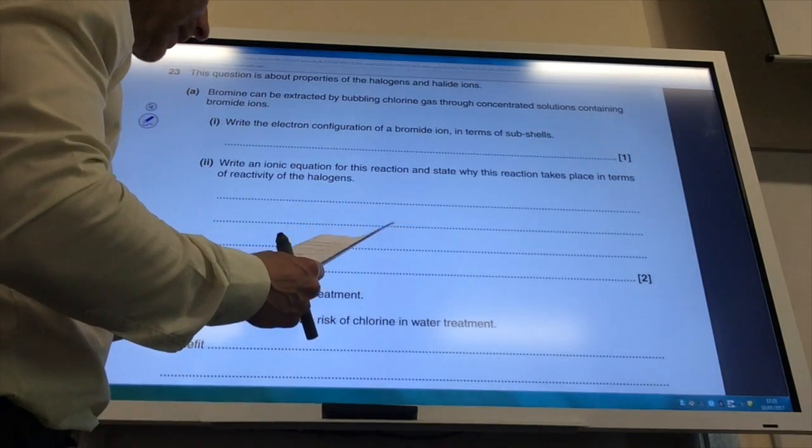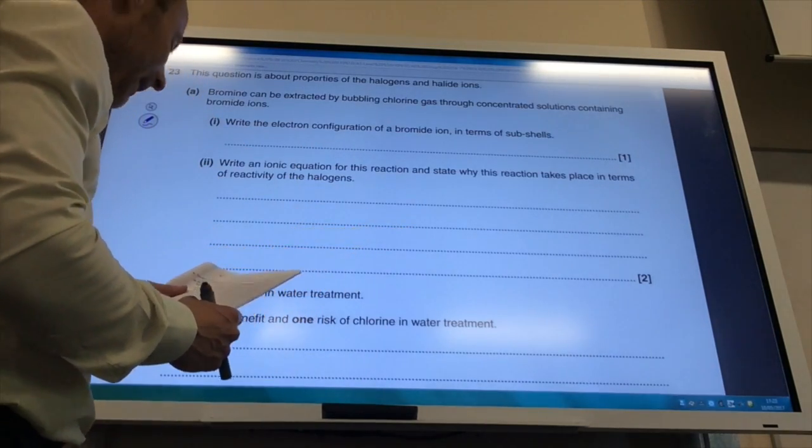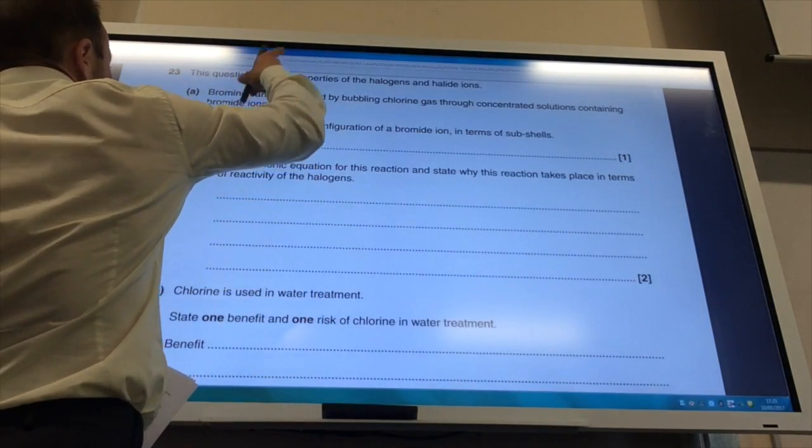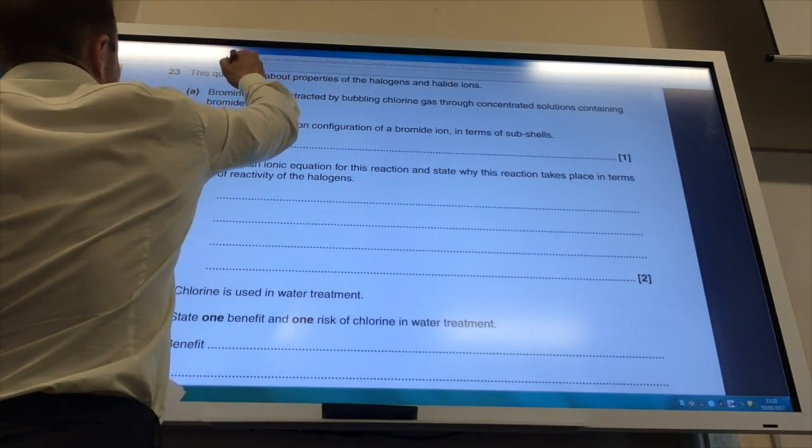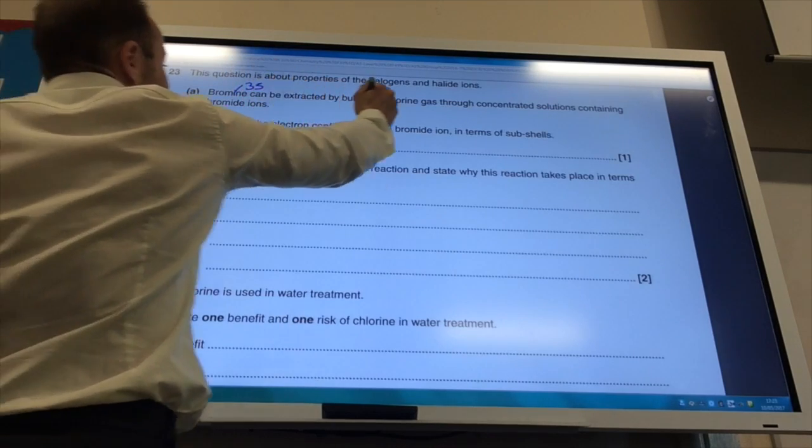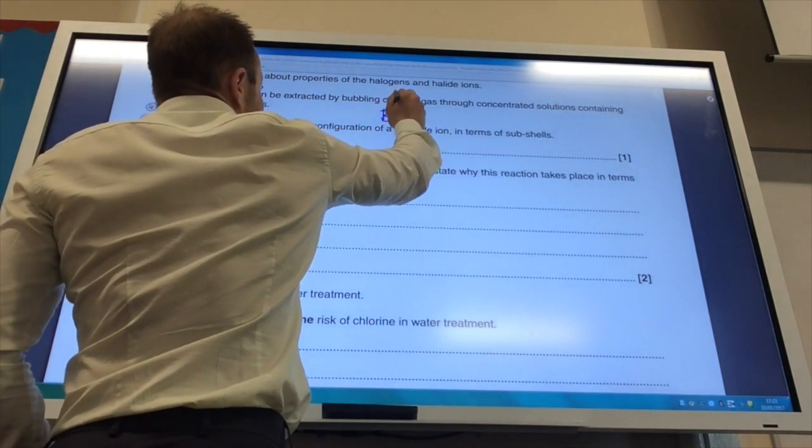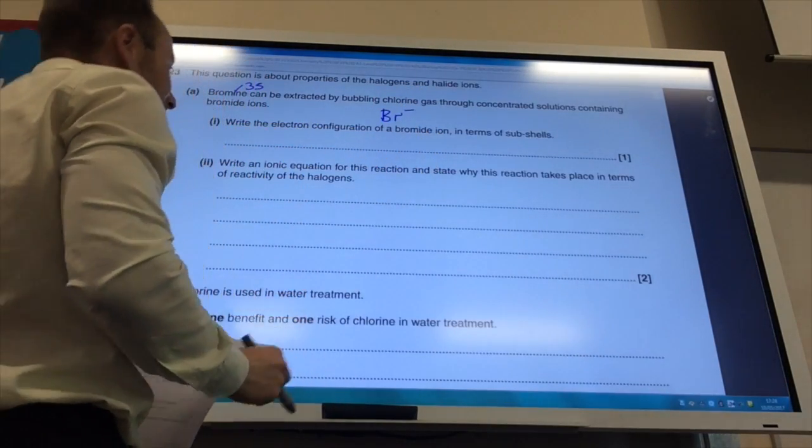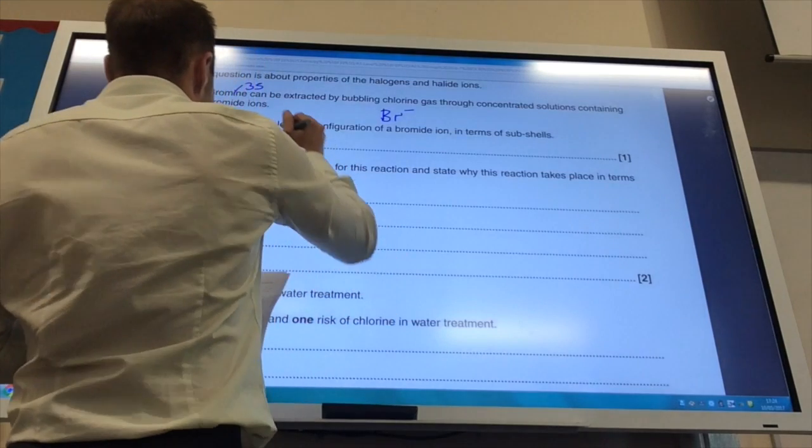So the bromide ion is going to, well the atomic number of bromine is 35 if you look up on the periodic table. Because it's bromide, that's Br minus, so it's going to fill up the 4p subshell.